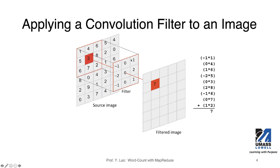We then move this filter along the x-axis and y-axis to cover every single pixel in the image. When we say every single pixel, we have to deal with pixels on the boundary in special cases. Because if you apply the filter at the boundary, the left side of the three values in the filter will not be able to perform the multiplication since those pixels are out of bounds. So we have to handle these special cases.